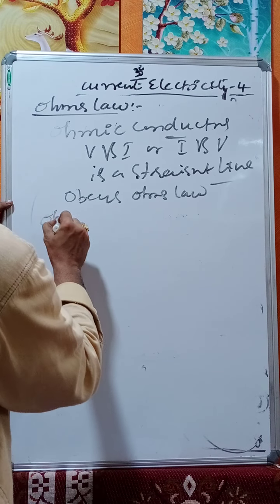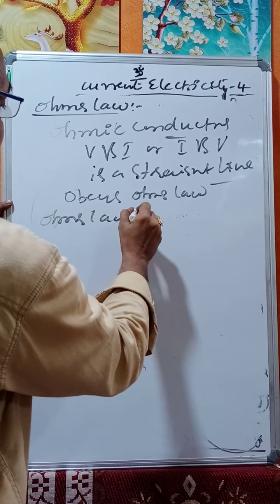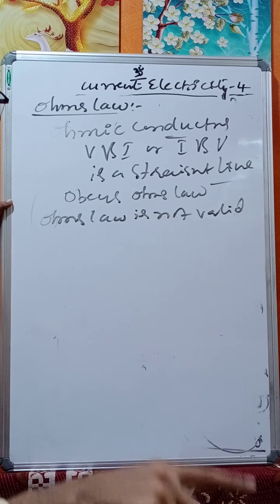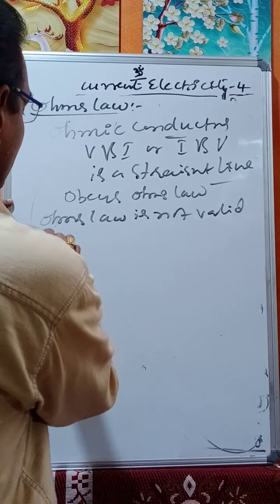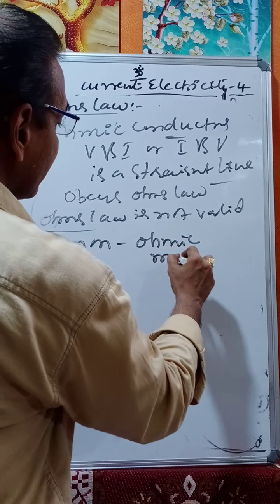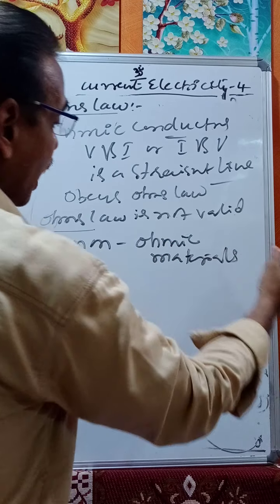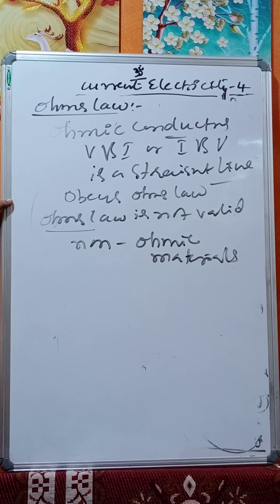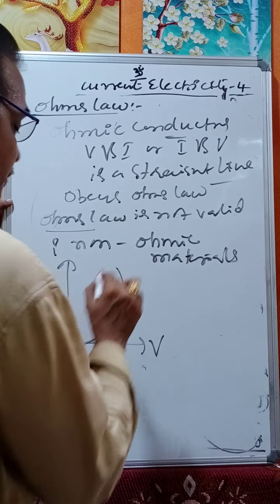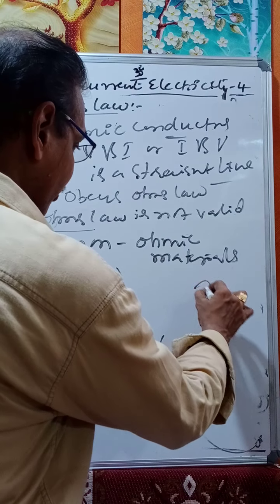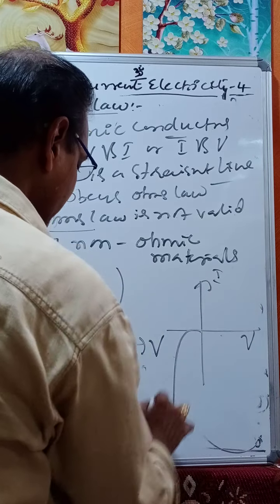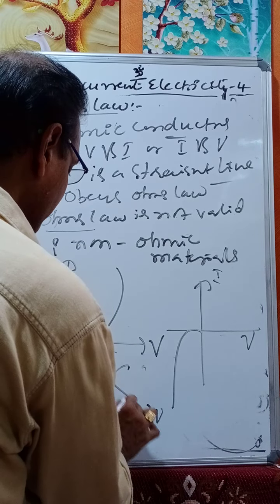For non-ohmic materials, Ohm's law is not valid — the empirical relation V equals IR may hold but the graph is not a straight line. Such materials are called non-ohmic conductors. For example, you may get a curved graph between voltage and current for these materials.